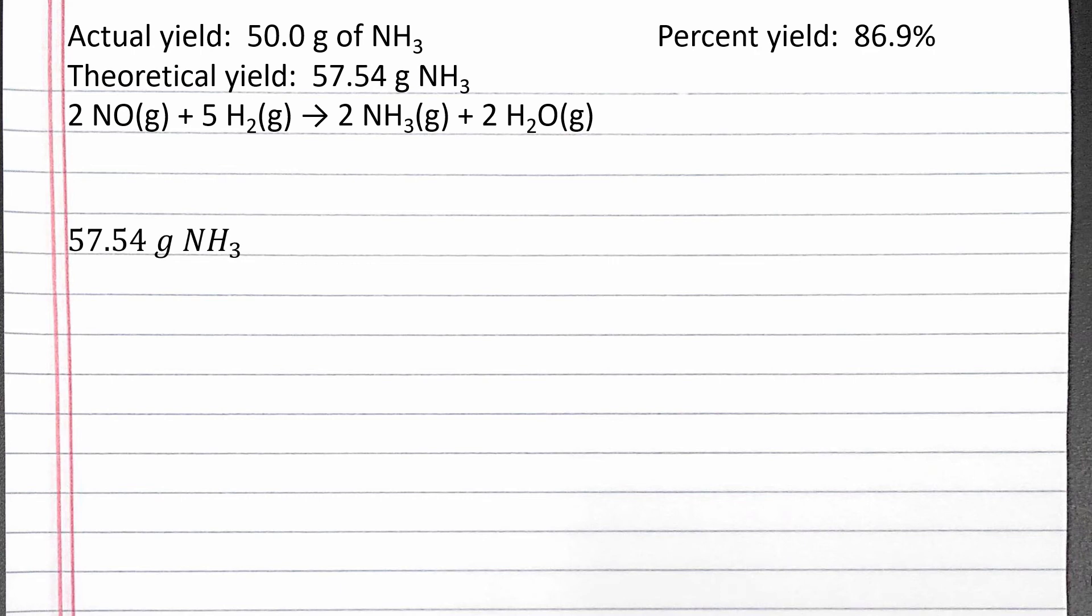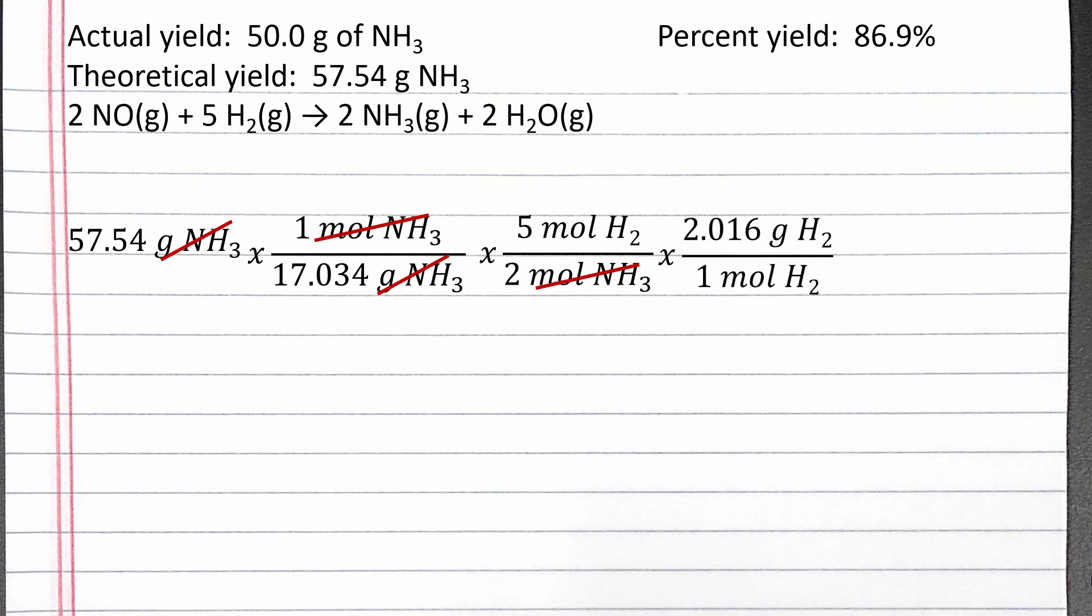Starting with 57.54 grams of ammonia, we use the molar mass of ammonia to convert from grams of ammonia to moles of ammonia. Then we use the coefficients in the balanced chemical equation to convert from moles of ammonia to moles of H2 gas. Then we use the molar mass of H2 to convert from moles of H2 to grams of H2.